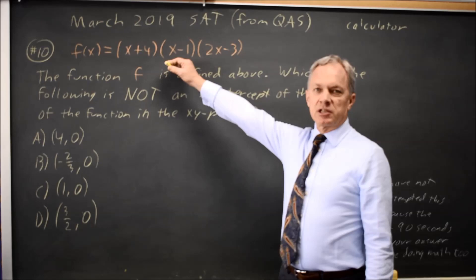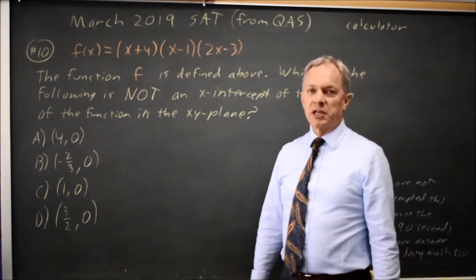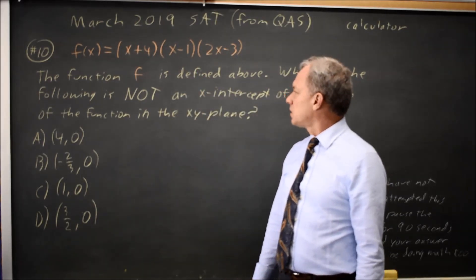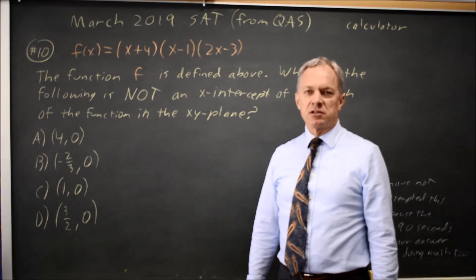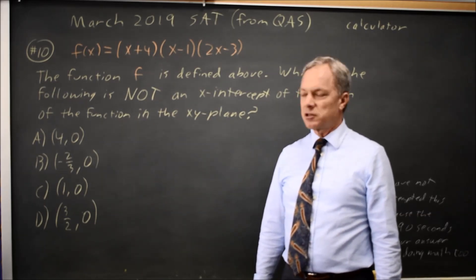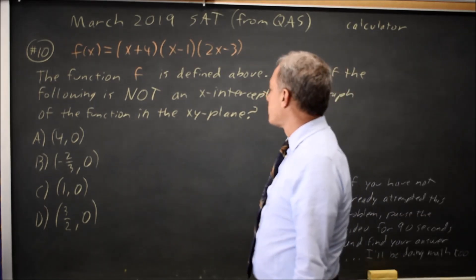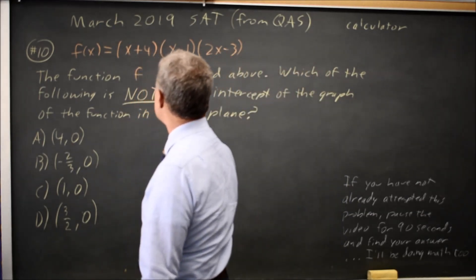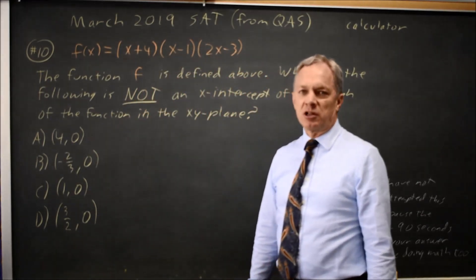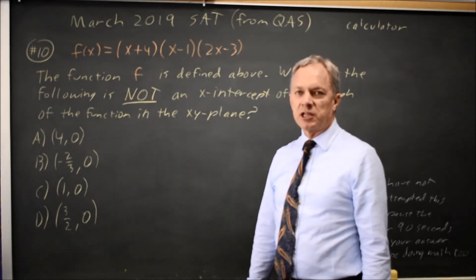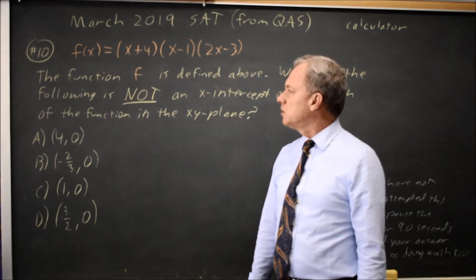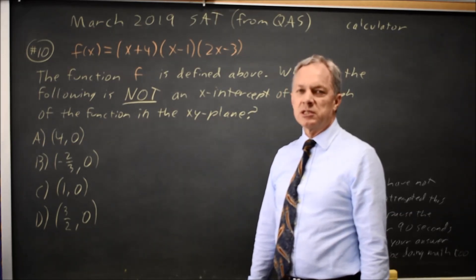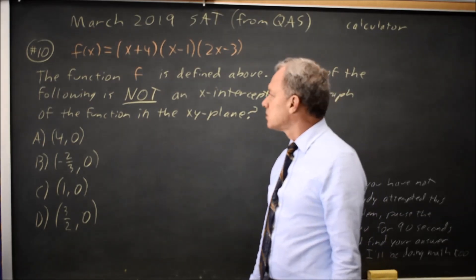College Board gives us a cubic polynomial in factored form and asks which of the following is not an x-intercept. X-intercepts are also zeros or solutions. Different names are roughly the same thing. Notice that they use all uppercase for not. They'll often underline or use uppercase to draw attention to a word that is frequently missed or misread leading to the wrong answer.